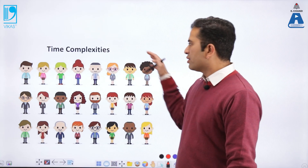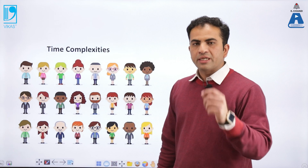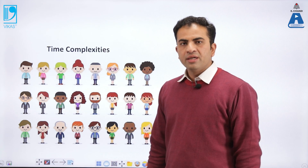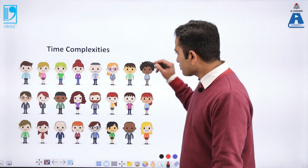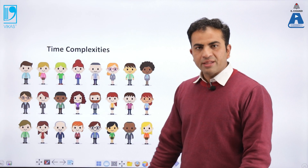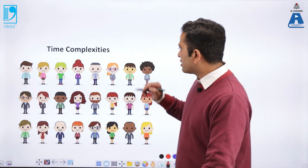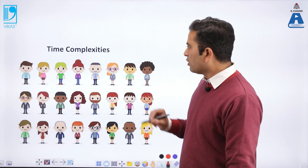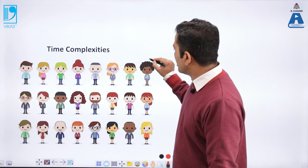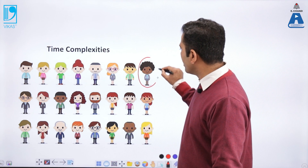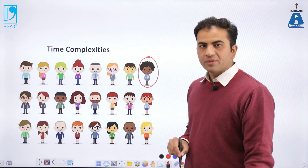There are 24 different children. Out of these 24 children, one child is having a pen and we have to identify which particular child is having the pen. There are 3 ways to identify which child has the pen.